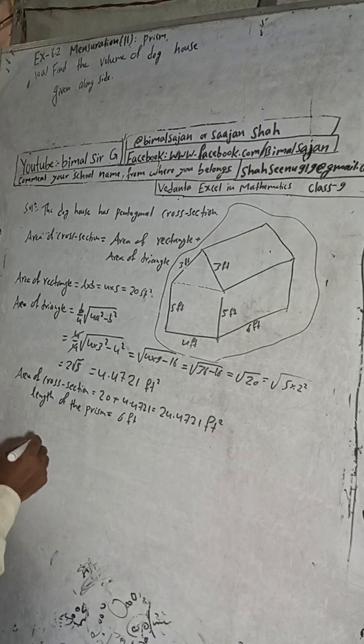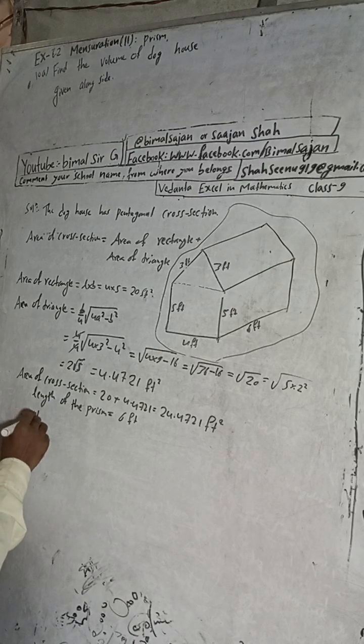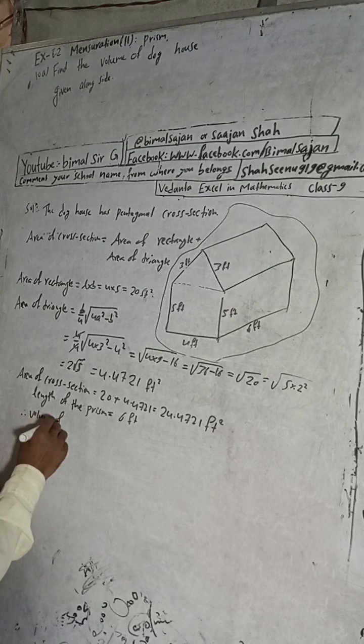Therefore, the volume of the dog house equals area of cross section multiplied by length.